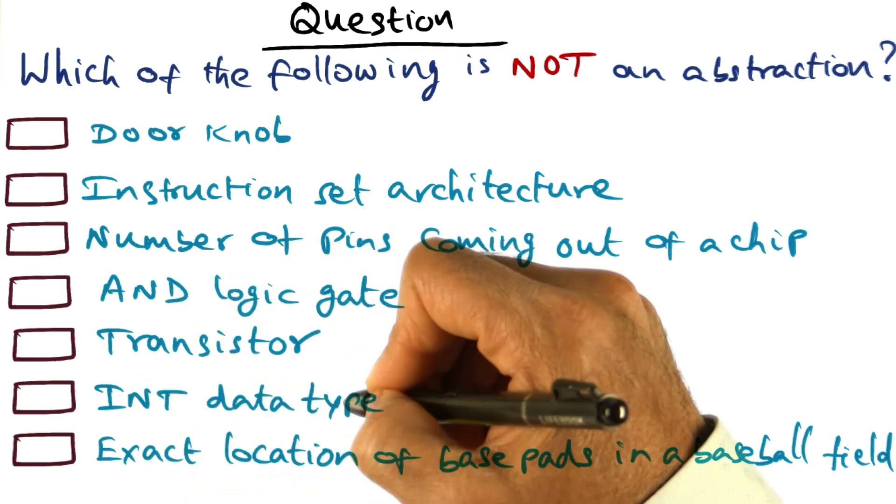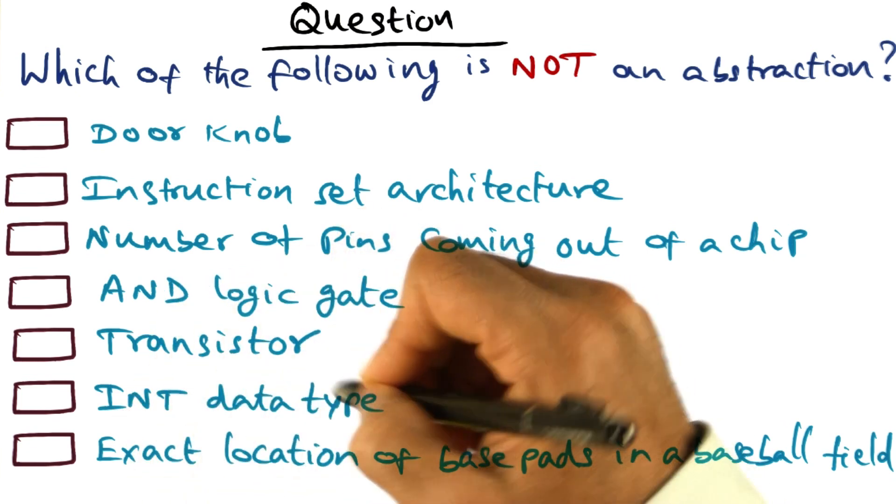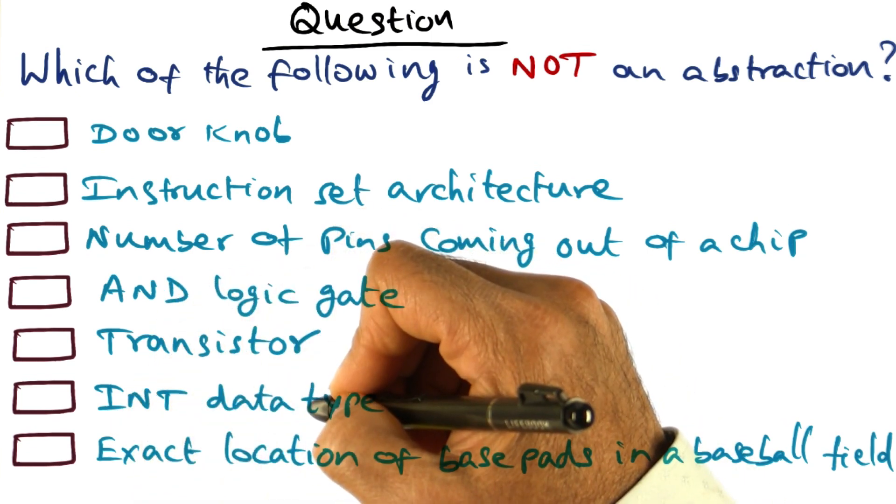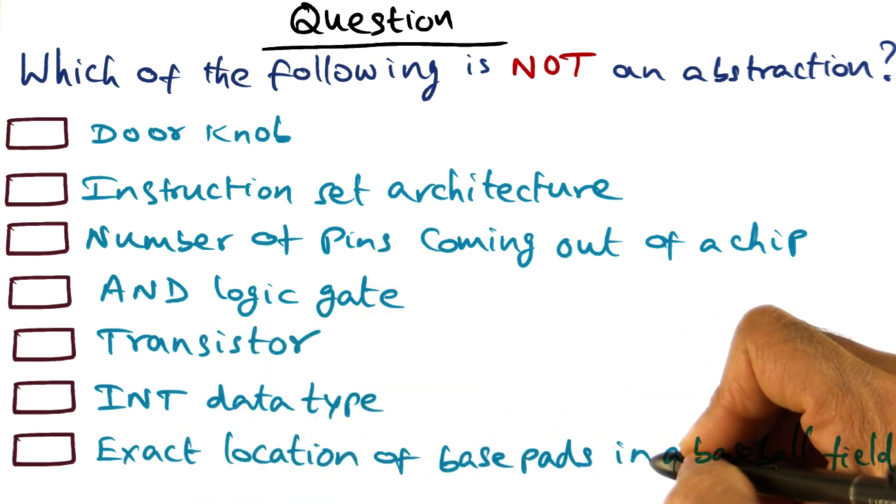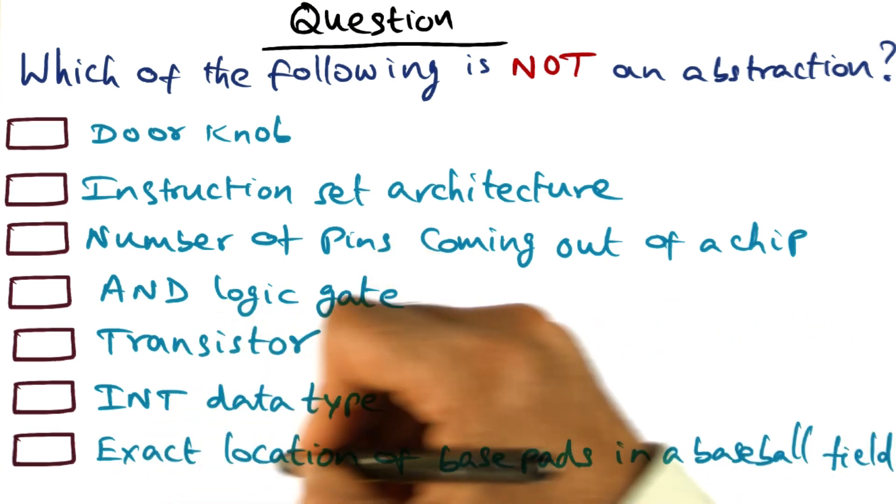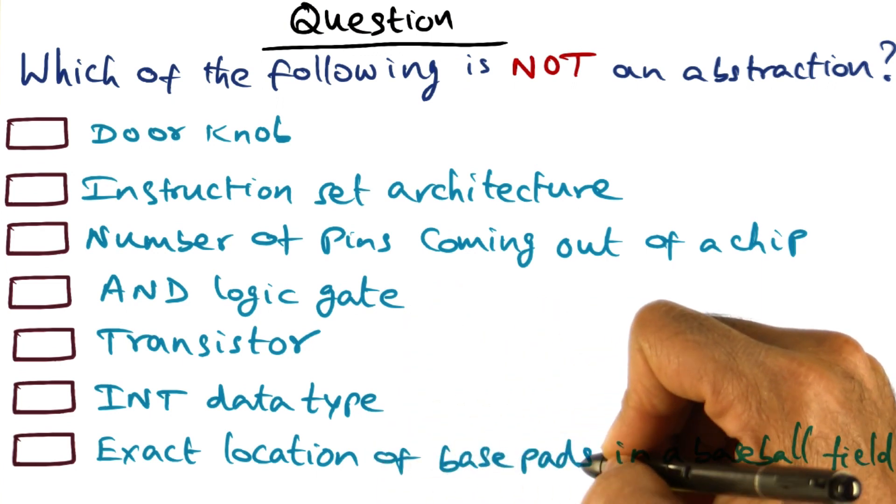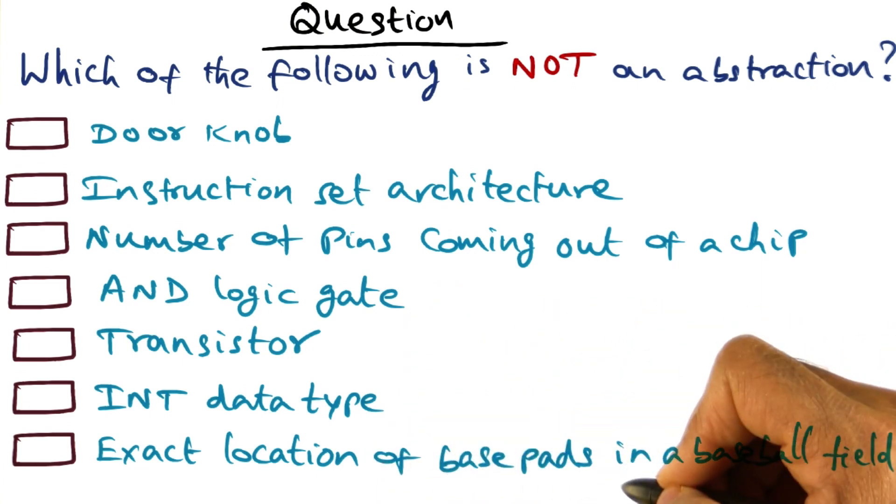And the next item I have for you is the int data type in a programming language like C. And the last item I have for you is exact location of base pads in a baseball field.